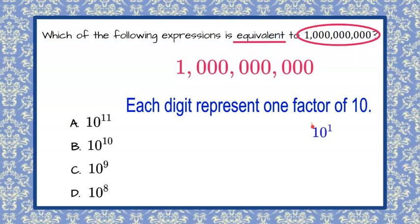So let's understand first 10 to the first. That's a power. And that means one 10, and that is equal to 10. Then if you consider 10 to the 2, that means two 10s multiplied. So 10 times 10 is 100.